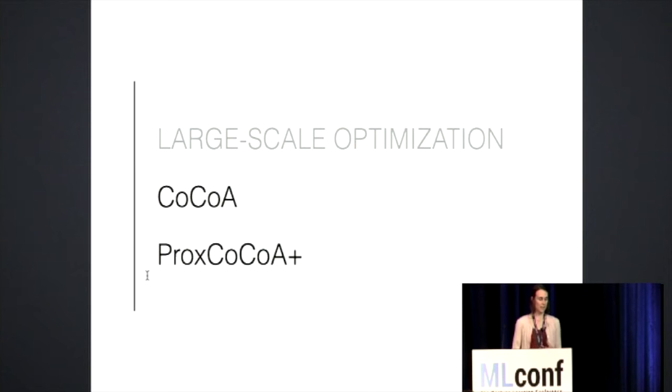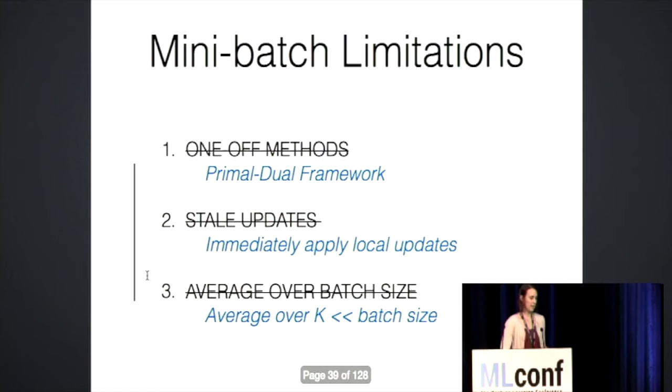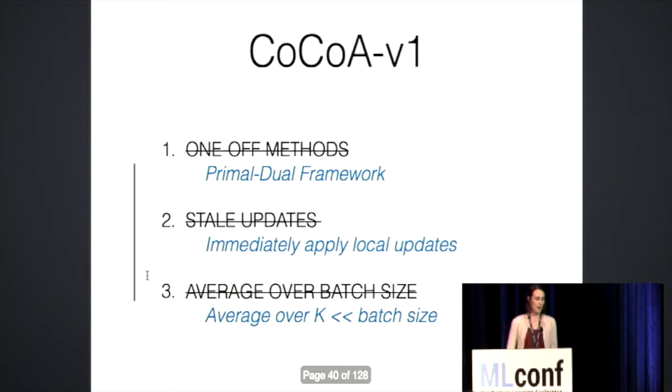So these are exactly the limitations that we looked at when we were developing the CoCoA framework. In particular, instead of having these one off methods, we've developed an entire framework that allows you to just readily apply single machine solvers into the distributed setting. We have the ability to immediately apply updates locally. And finally, once we send everything back to the master, we take an average over the number of machines, K. That's strictly less than the batch size. So you can think of that as allowing your updates to go further when they're back on the master machine. So these are the principles behind the first version of the framework that we developed, CoCoA version 1.